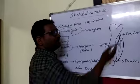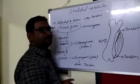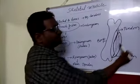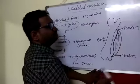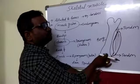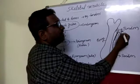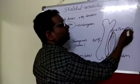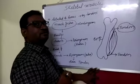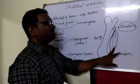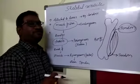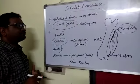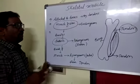Skeletal muscles are called so because they are attached to the bones. They are attached by a special dense irregular connective tissue called tendon. With the help of tendon, skeletal muscles are attached to the bones.